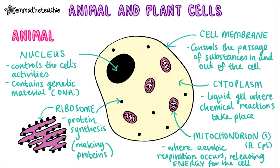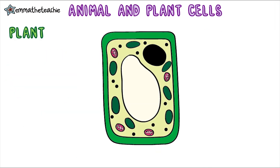So those are all the parts you need to learn for an animal cell. Now let's look at a plant cell. I want you to pause the video and see which parts you can already label — you'll know some from what we've just covered.